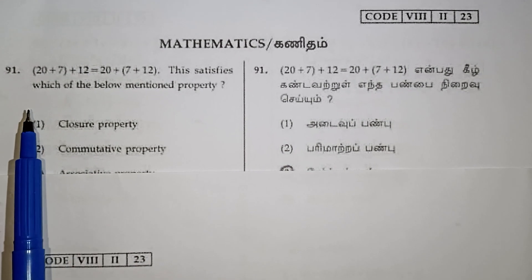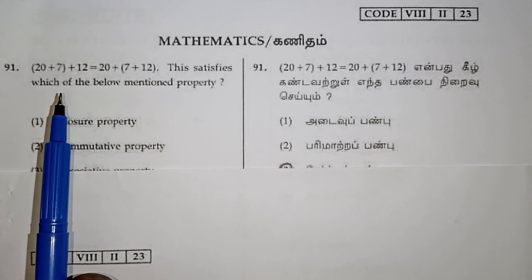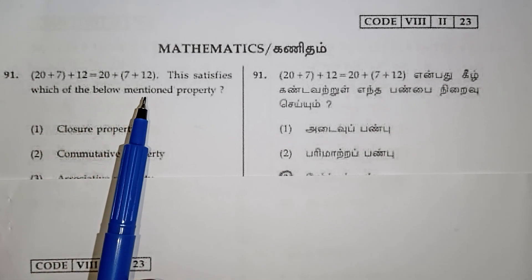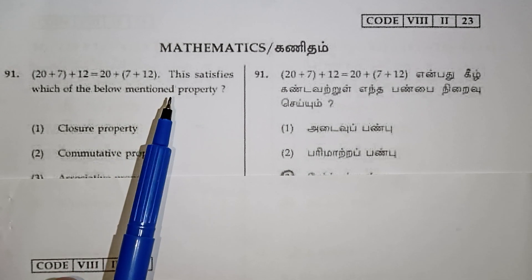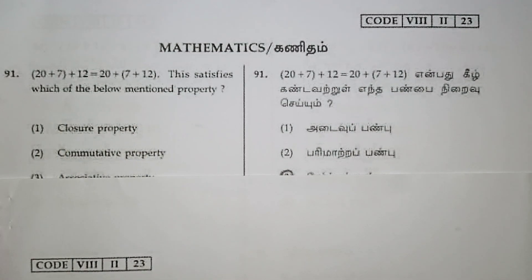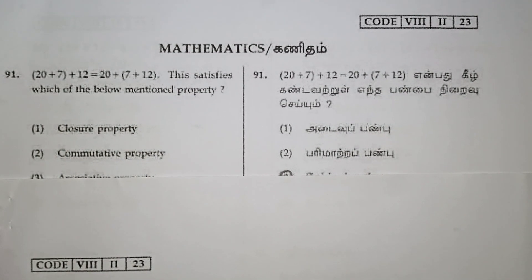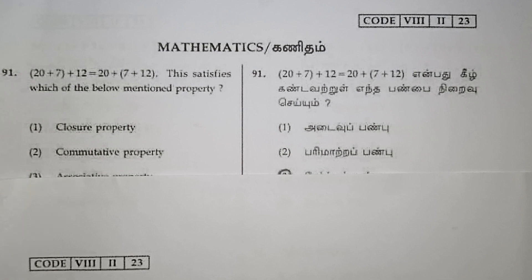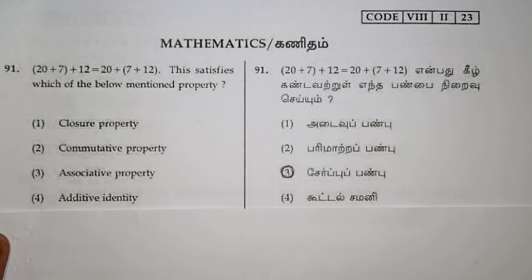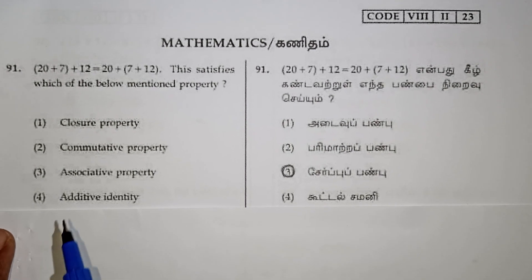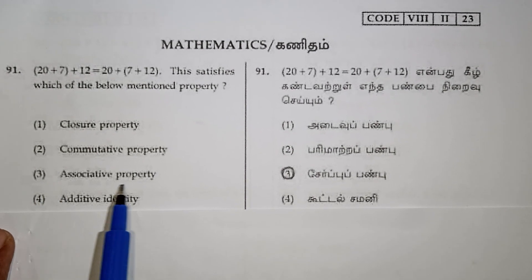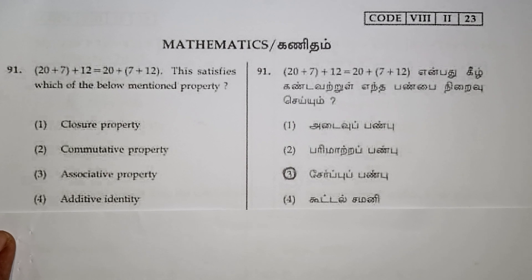First question: 20 plus 7 plus 12 equals 20 plus 7 plus 12. This satisfies which property? This is actually the associative property.